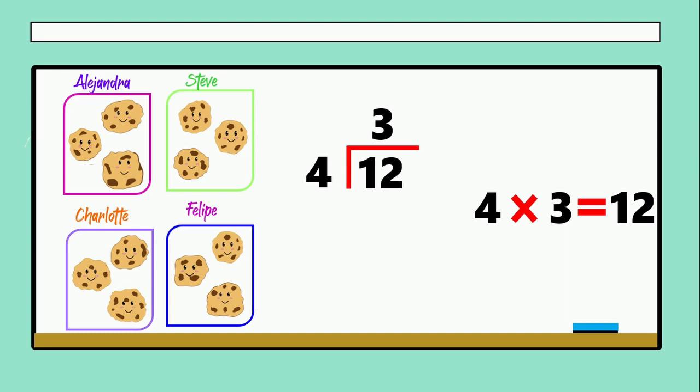We have to write the answer of the multiplication below of the twelve. So twelve and twelve. Now we have to subtract those numbers. Twelve minus twelve. What is the answer? Very good. It's zero. As you can see, we have the enough cookies for each one. And how many left? Zero. That is the answer.